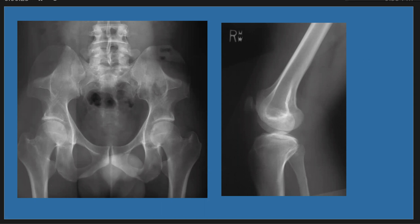This is a new case discussion. We are looking at the AP view of the pelvis and the right knee joint. We have pathology in these two X-rays. What do you see?